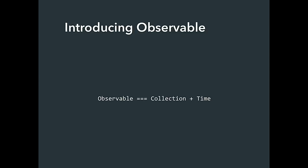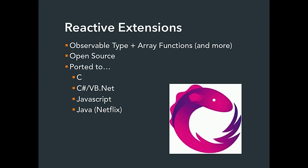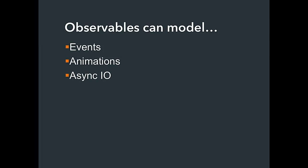The type of mouse moves is what we call an Observable — a type we discovered about five years ago. It's basically a collection over time. You can get the Observable type — which is just this type with all the array functions you know and love plus many more — implemented in the Reactive Extensions library. It's an open source JavaScript library. Observable is so powerful because it can model the three most common things in user interfaces: events, asynchronous requests, and animations.